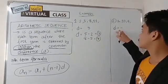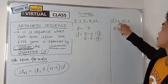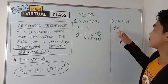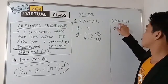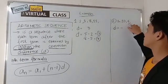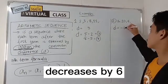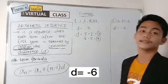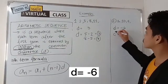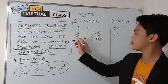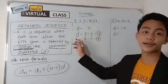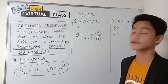So, with this sequence in number 2, 16, 10, 4, and so on. So, it decreases by what number? 16 became 10 and 10 became 4. So, obviously, it decreases by 6. Therefore, the common difference is negative 6. You may also use this method in identifying or determining your common difference.